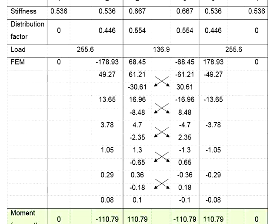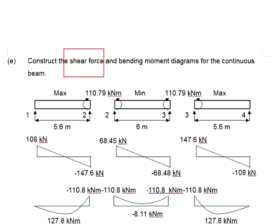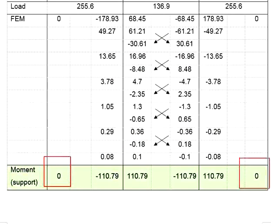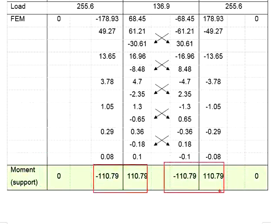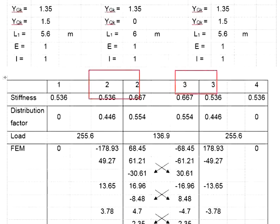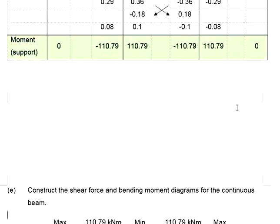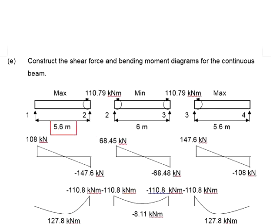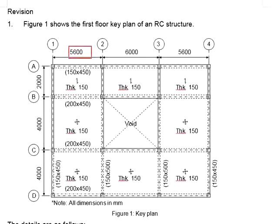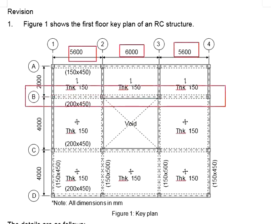Now that we have done the analysis of a continuous beam using the moment distribution method, our next step will be constructing the shear force and the bending moment diagram for the beam. From the analysis result, there is zero moment at the end spans and about 110 kNm at joints 2 and 3. Our next step will be determining the shear force in each span. The beam spans are 5.6m, 6m, and 5.6m for beam B124.